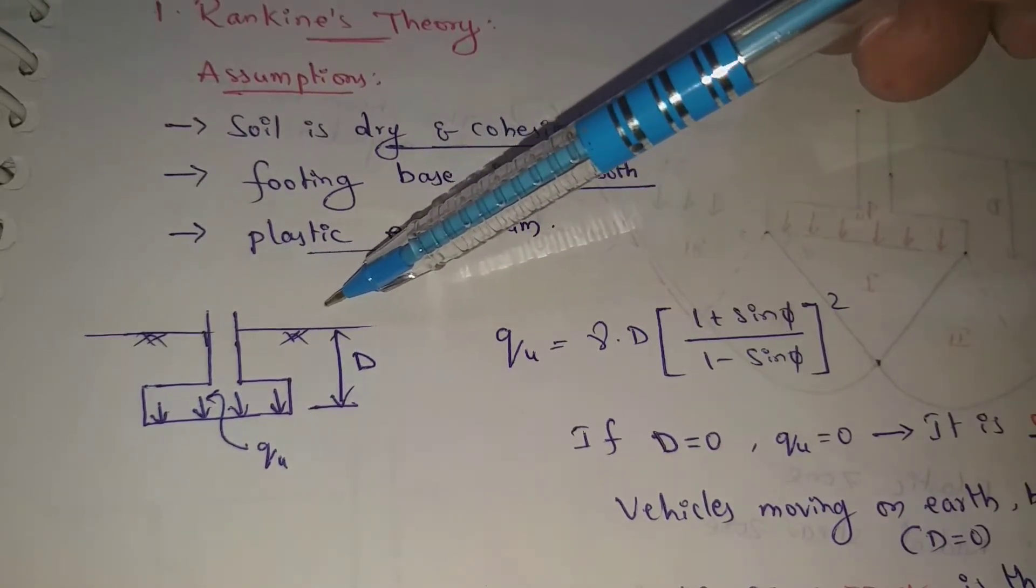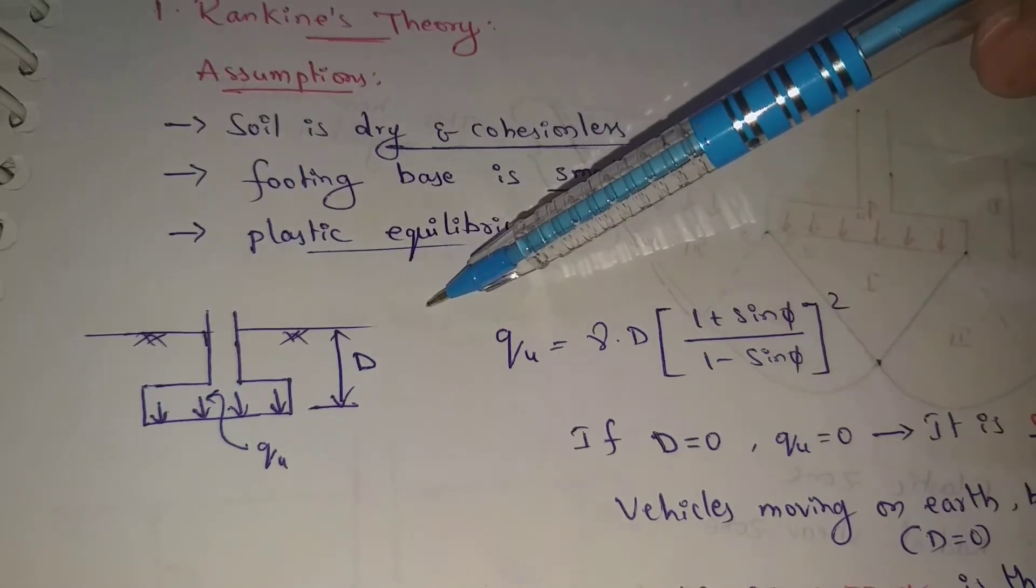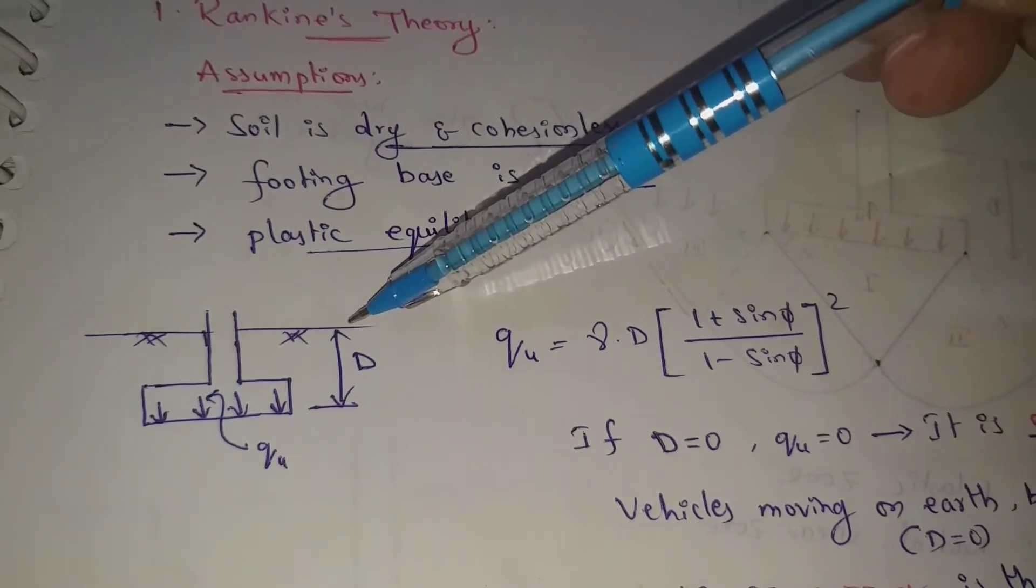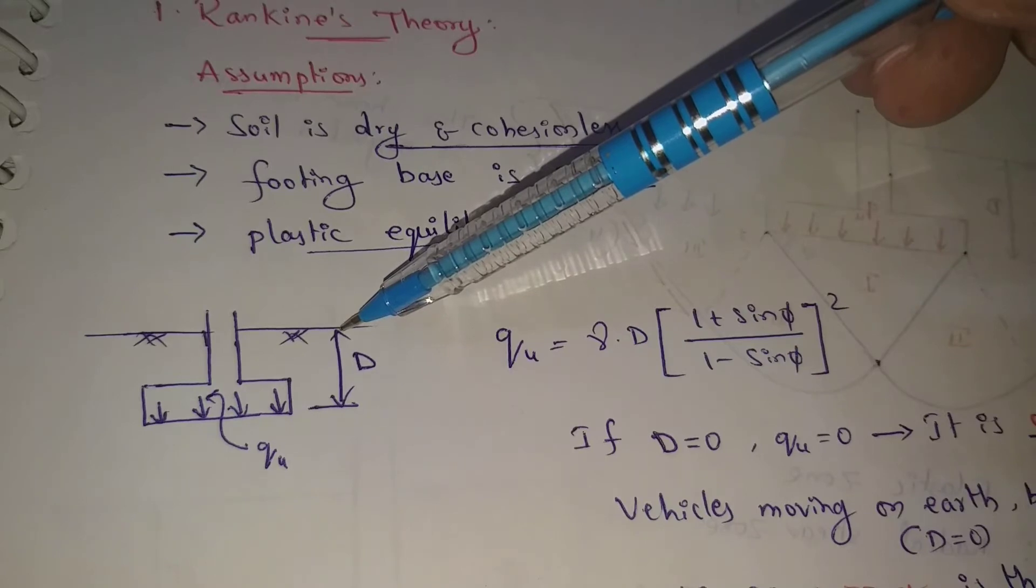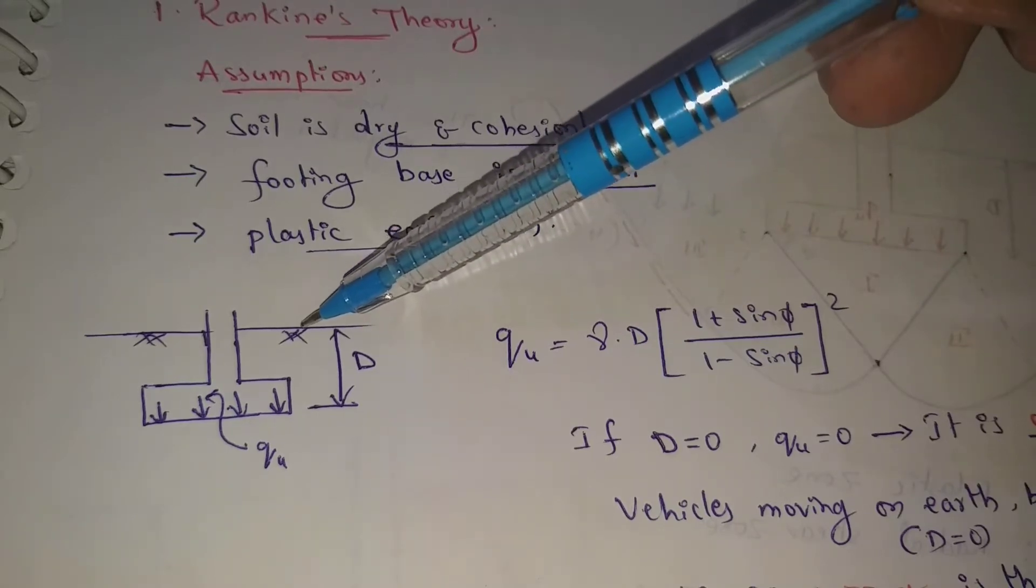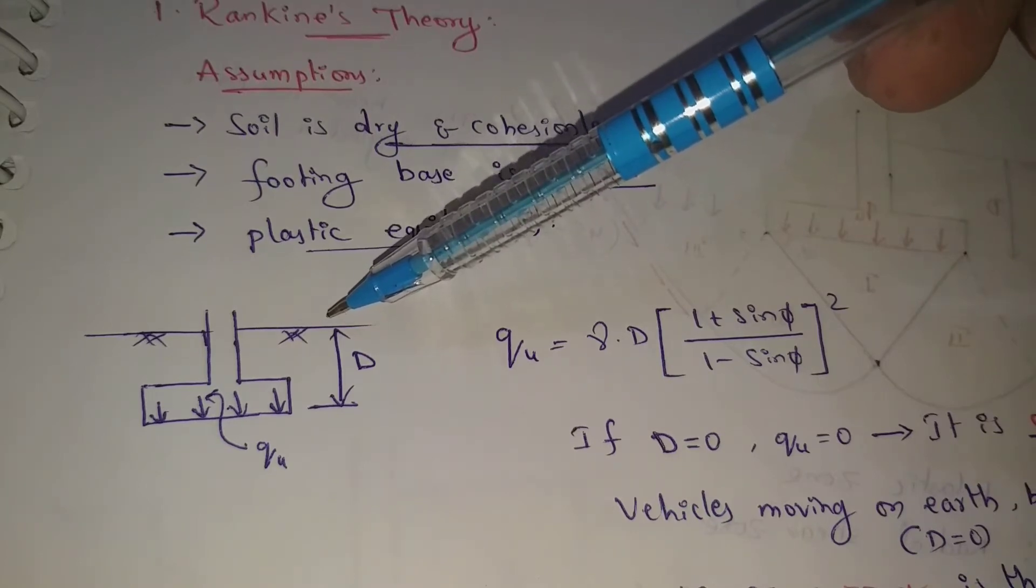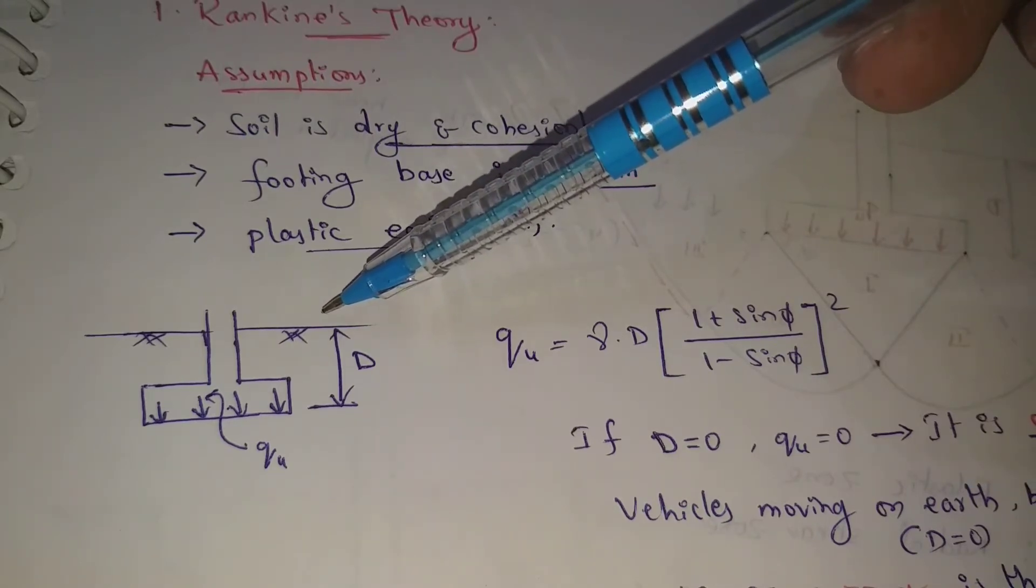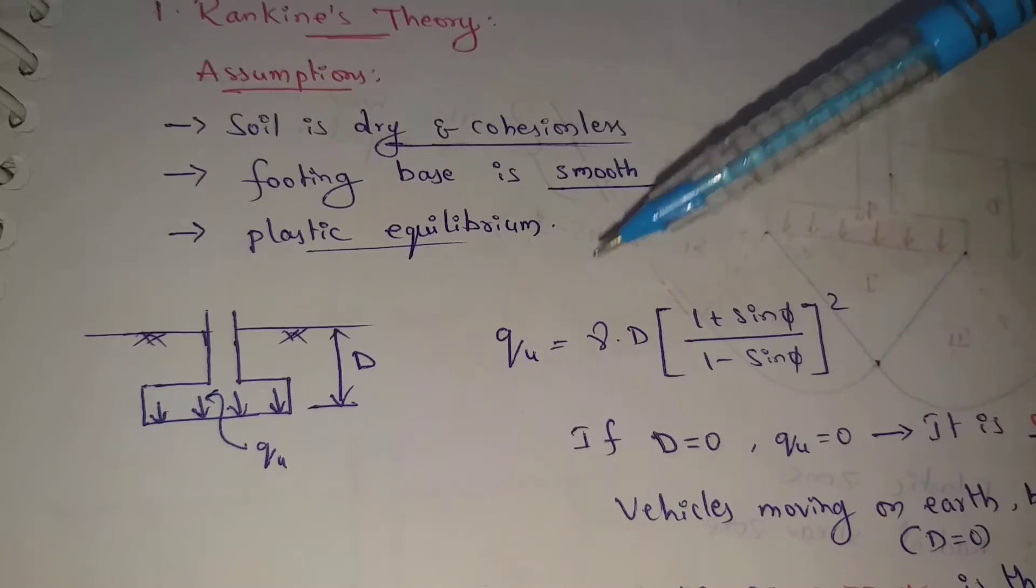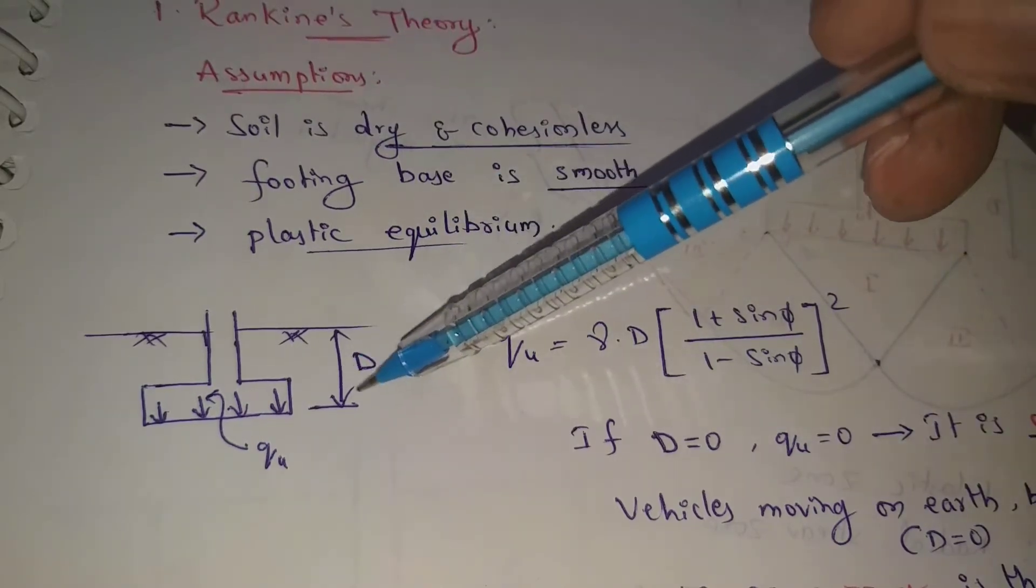Vehicle moving on earth surface with D=0, this is wrong for that case. On the surface field, the bearing capacity of the soil is 0 when depth is 0.